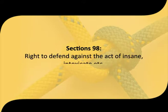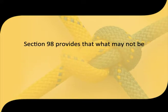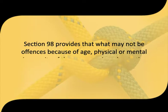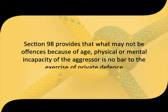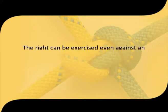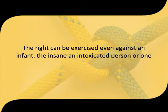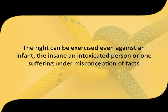Section 98 deals with the right to defend against the act of an insane or intoxicated person. Section 98 provides that what may not be offenses because of the age, physical or mental incapacity of the aggressor is no bar to the exercise of private defense. Hence the right can be exercised even against an infant, an insane person, an intoxicated person, or one suffering under a misconception of facts. For example, if Z under the influence of madness attempts to kill A, Z is guilty of no offense, but A has the same right of private defense which he would have if Z were sane.